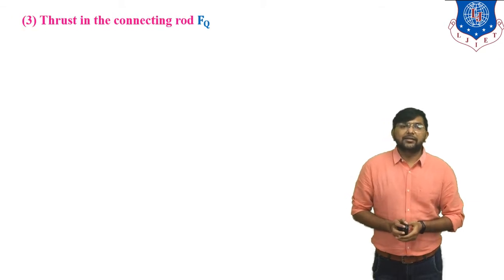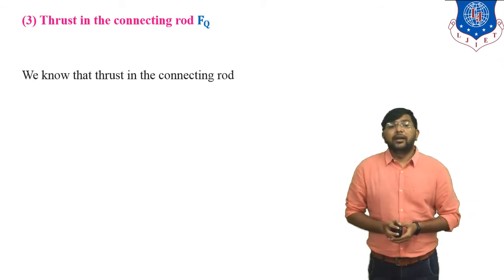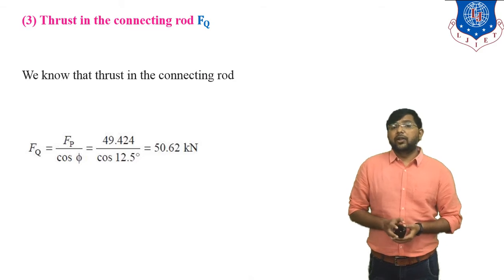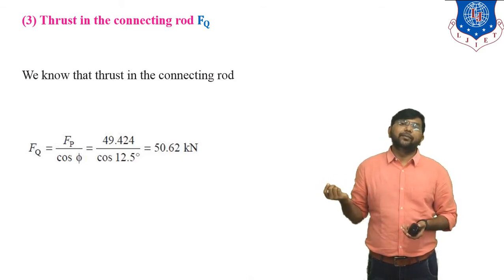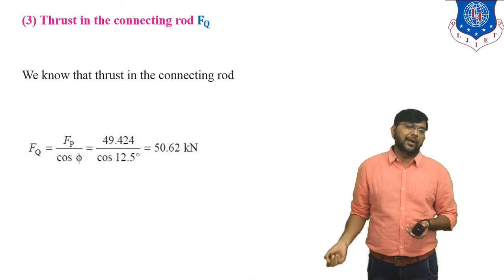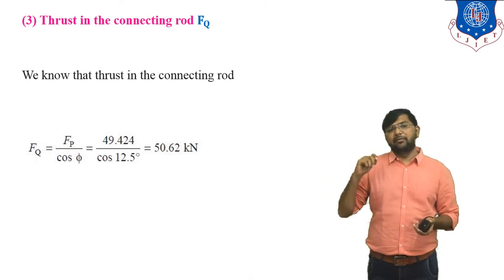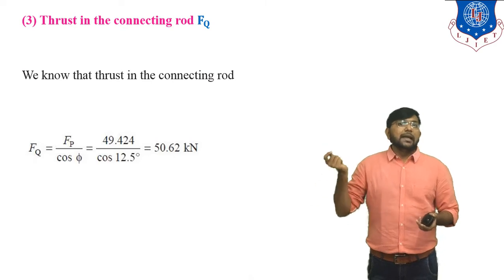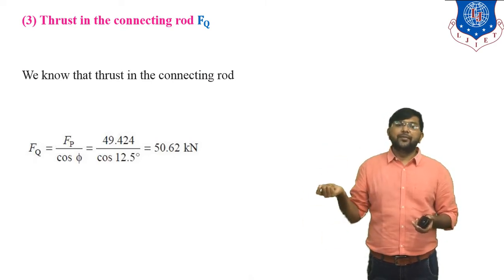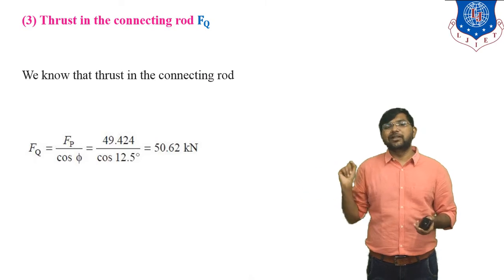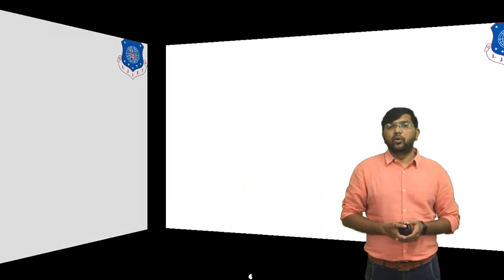Next, the thrust in the connecting rod F_q = F_p / cos φ. Substituting F_p = 49.424 kN and cos 12.5°: F_q = 49.424 / cos 12.5° = 50.62 kN. This is the thrust in the connecting rod.